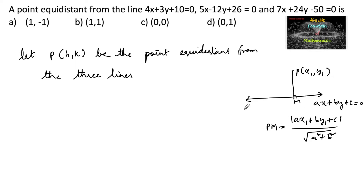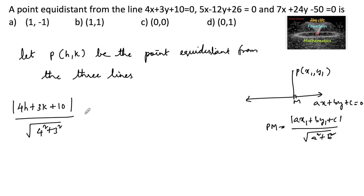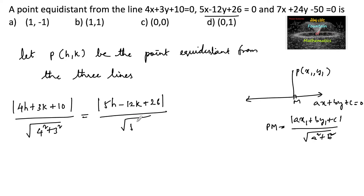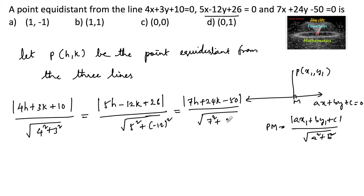Using this perpendicular distance concept from point (h, k) to the given lines, and setting them equal, we write: |4h + 3k + 10| / √(4² + 3²) = |5h − 12k + 26| / √(5² + 12²) = |7h + 24k − 50| / √(7² + 24²).